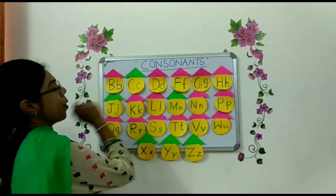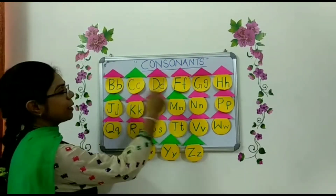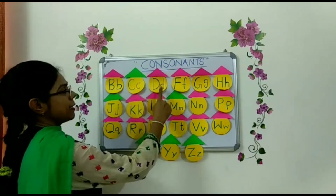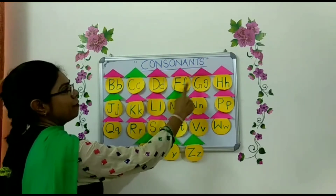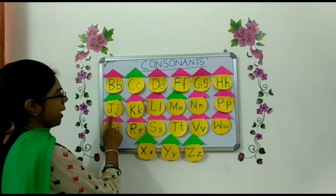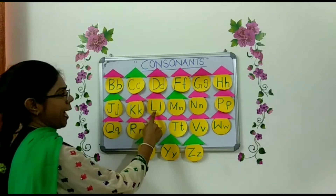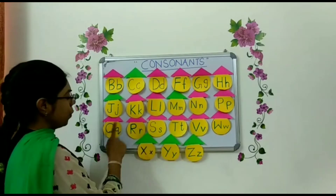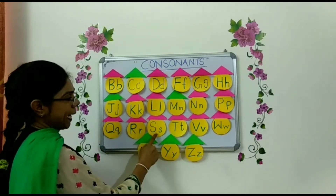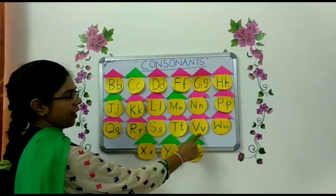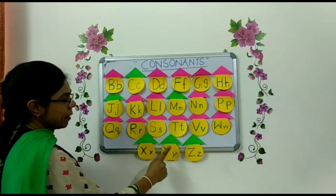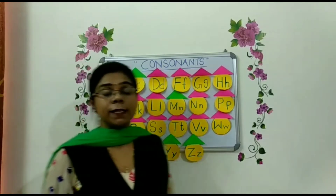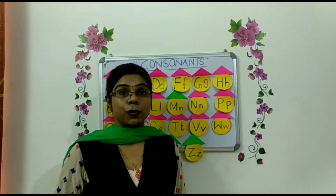Capital B, small b. I have written capital as well as small alphabets. B, C, D, F, G, H, J, K, L, M, N, P, Q, R, S, T, V, W, X, Y, Z. These 21 letters are known as consonants.